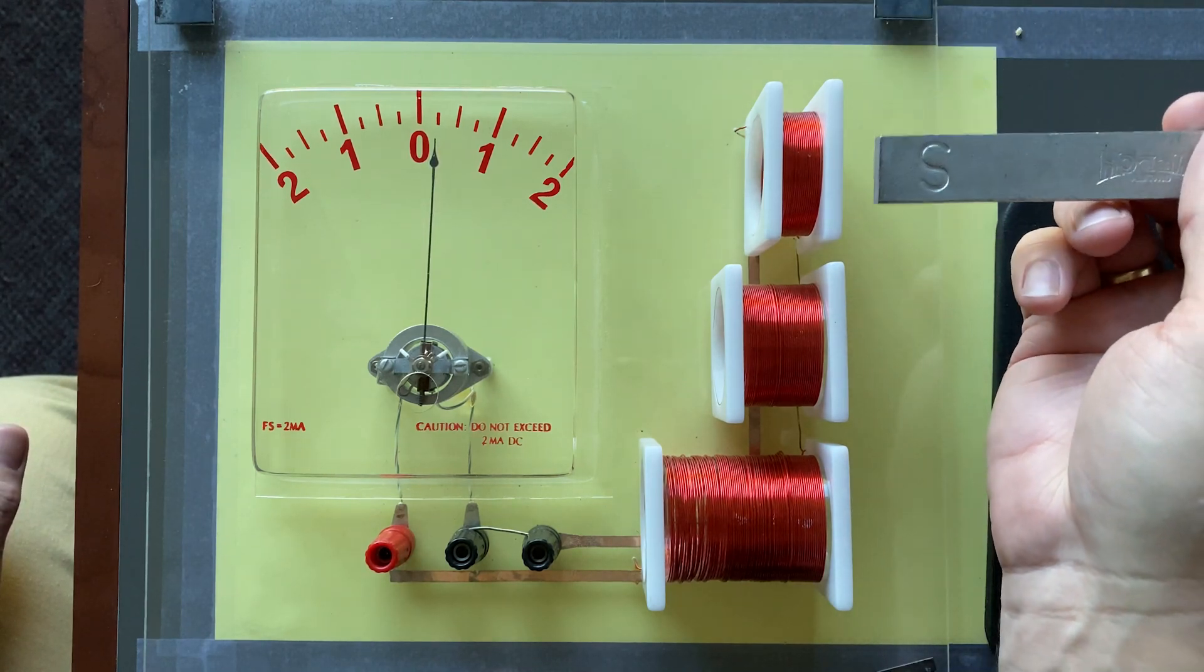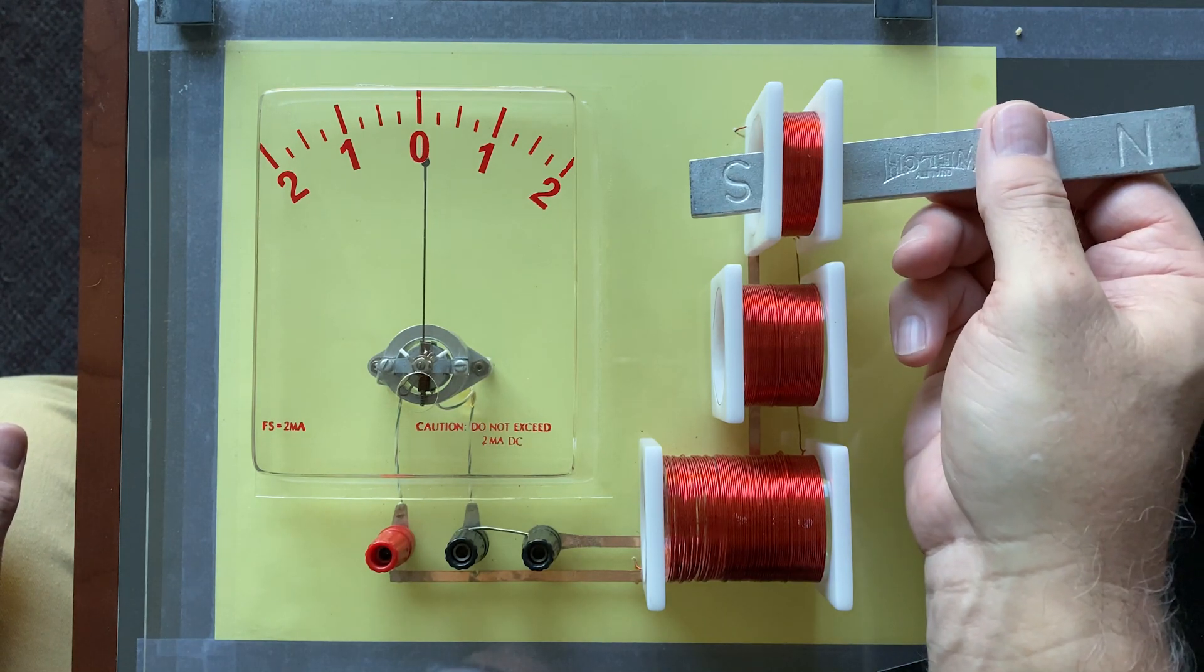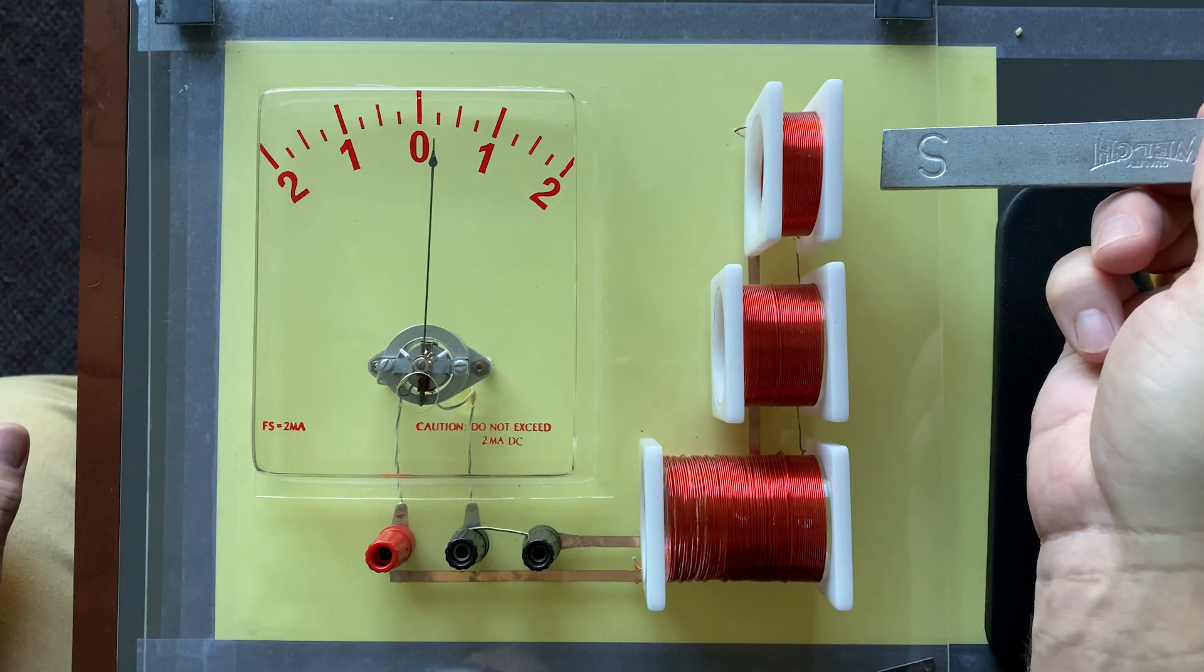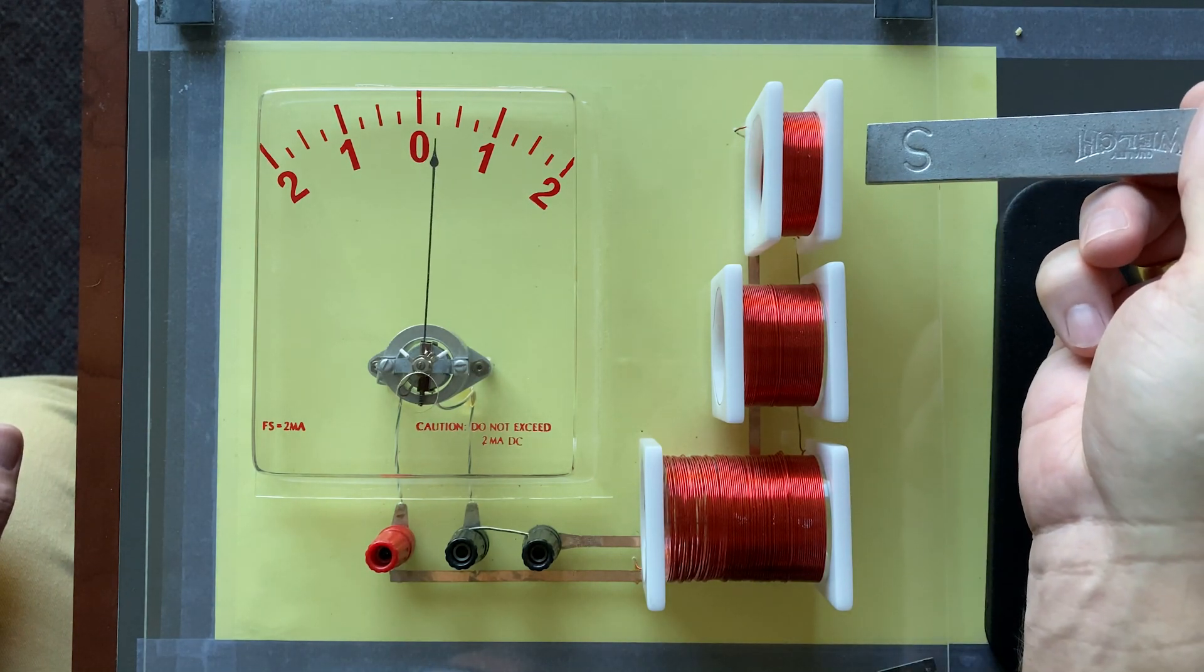But, if I turn the magnet around, now I've got the south pole. Let's see. In deflects to the left. Out deflects to the right. In deflects to the left. Out deflects to the right.